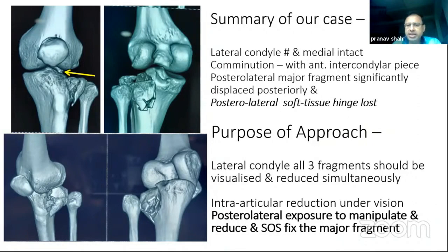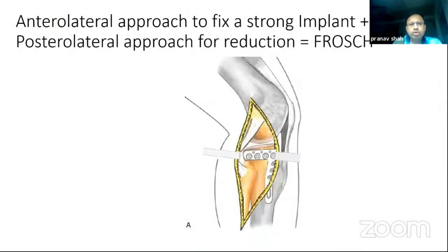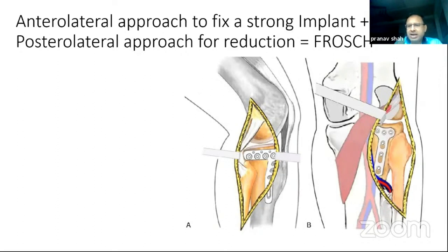The intra-articular reduction should preferably be done under direct vision, and a posterolateral exposure will most likely be necessary to manipulate the large fragment and fix it from behind if necessary. We need an anterolateral approach for a strong implant, and a posterolateral approach for reduction. The combination of the two — posterolateral as well as anterolateral — is the Frosch approach.